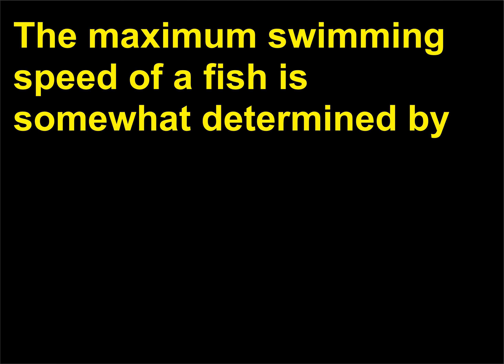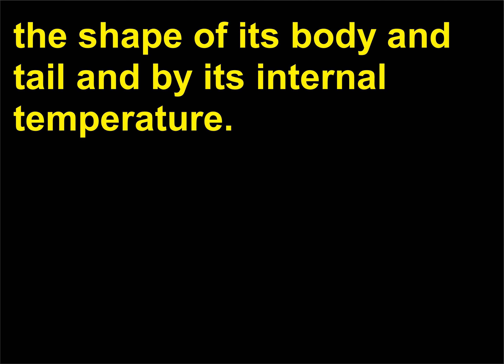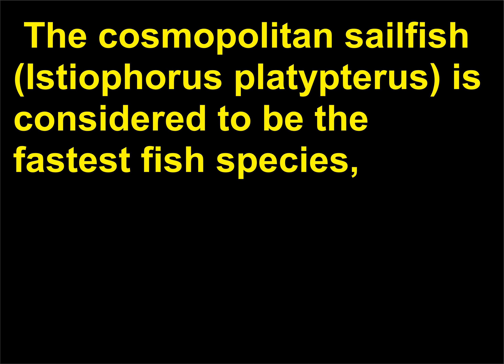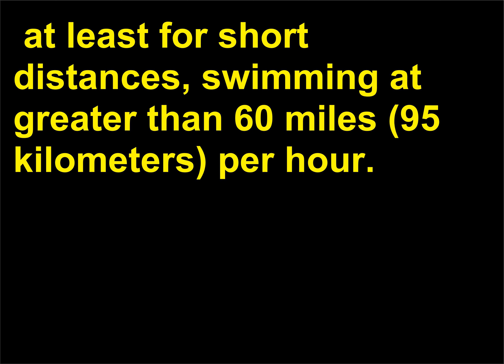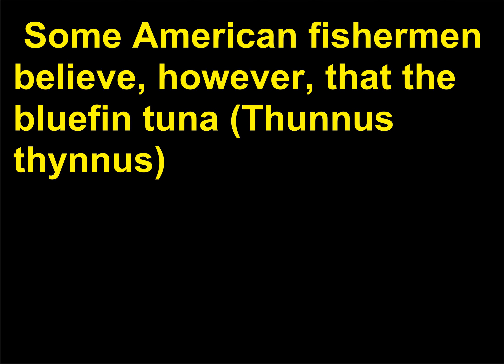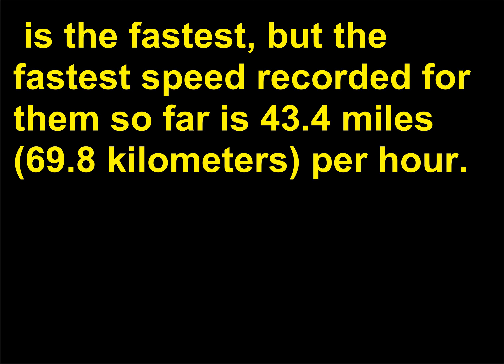At what speeds do fishes swim? The maximum swimming speed of a fish is somewhat determined by the shape of its body and tail and by its internal temperature. The cosmopolitan sailfish, Istiophorus platypterus, is considered to be the fastest fish species, at least for short distances, swimming at greater than 60 miles, 95 kilometers, per hour. Some American fishermen believe, however, that the bluefin tuna, Thunnus thynnus, is the fastest, but the fastest speed recorded for them so far is 43.4 miles, 69.8 kilometers, per hour.